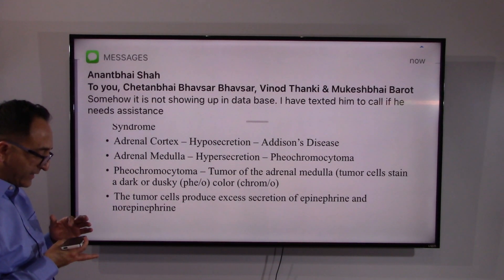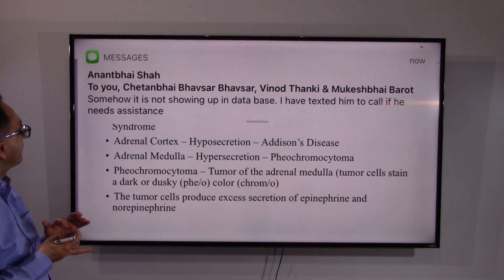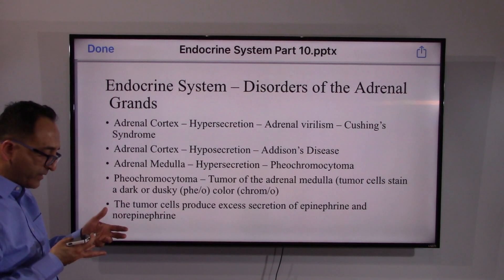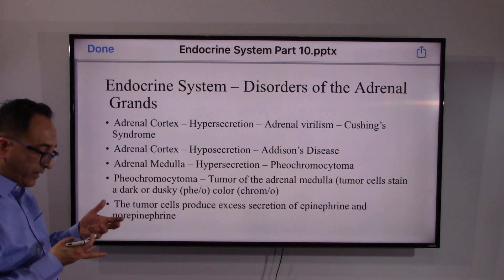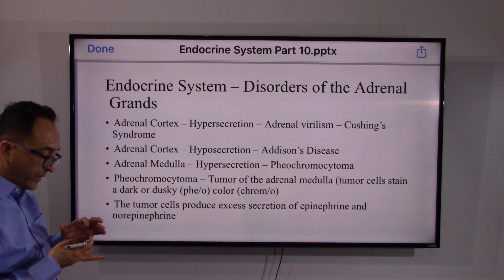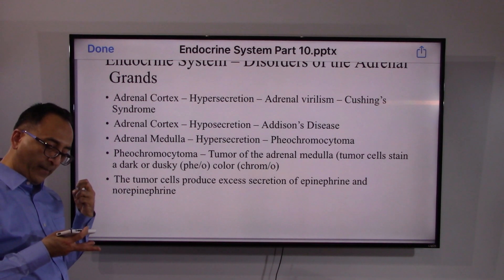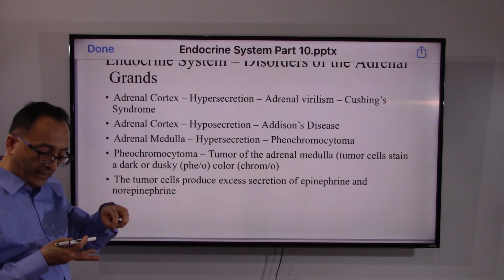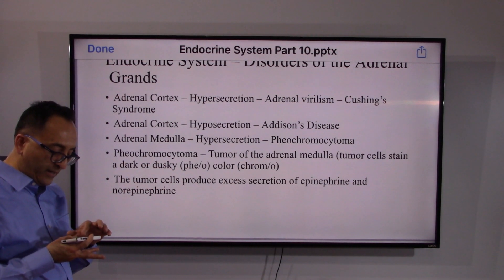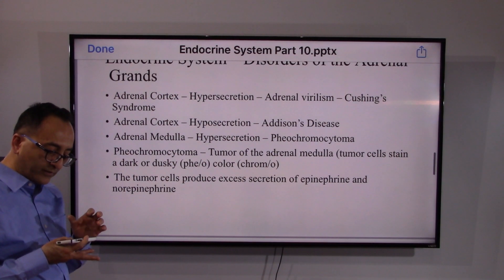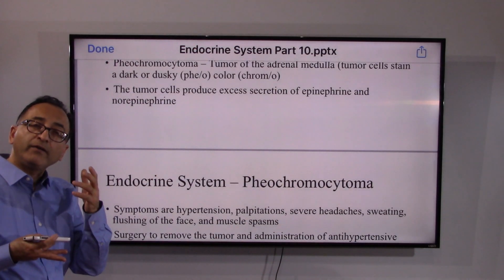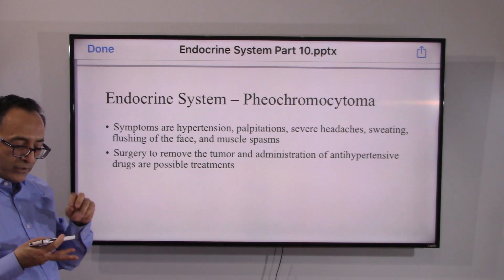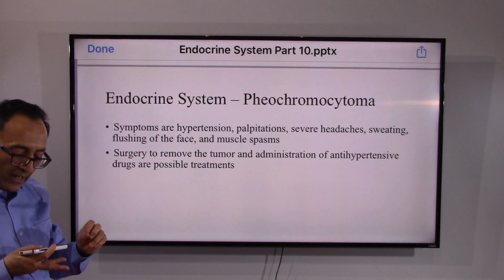Adrenal cortex hypersecretion leads to adrenal virilism and Cushing's syndrome. Adrenal medulla hypersecretion leads to a tumor called pheochromocytoma — a tumor of the medulla, not the cortex. That tumor produces excess secretion of epinephrine and norepinephrine, which makes sense since we reviewed that the medulla releases those two hormones.